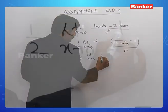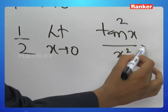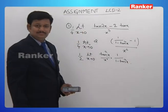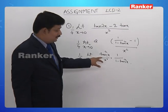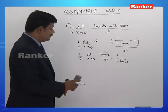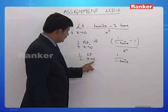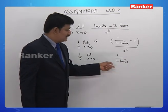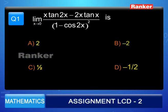We have tan²x in the numerator divided by x² into 1 by 1 minus tan²x. As x tends to 0, tanx by x is 1, so tan²x by x² is also 1. And as x tends to 0, tanx tends to 0, so 1 by 1 minus tan²x is also 1. Effectively, our answer is 1/2, or the correct option is C.